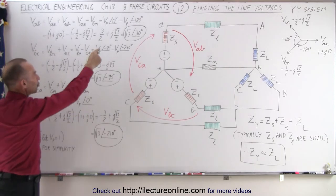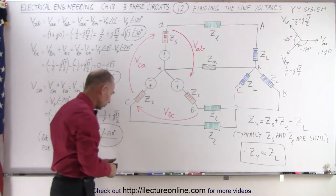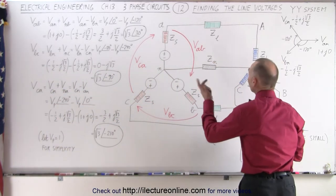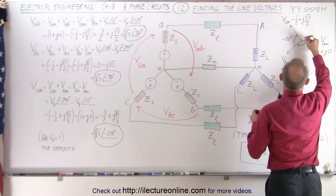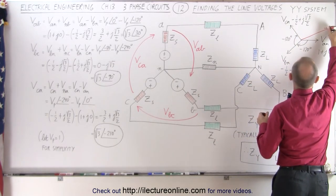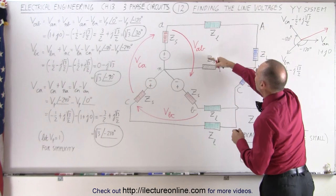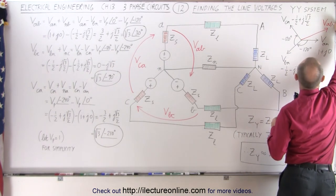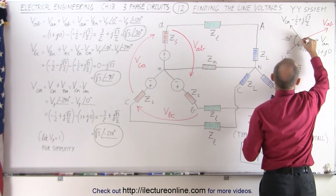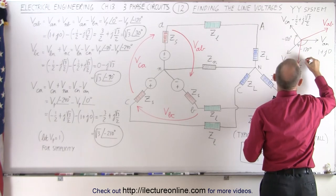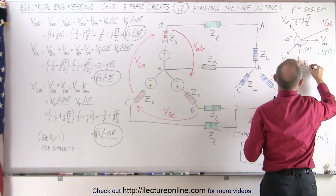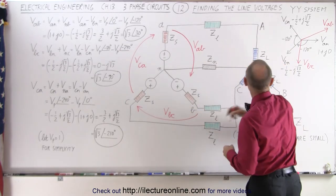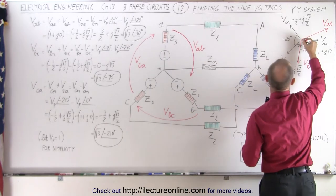Drawing these three line voltages on the phasor diagram, we can identify them. This one here would be voltage V_AB, this one here would be voltage V_BC, and this one here would be voltage V_CA.